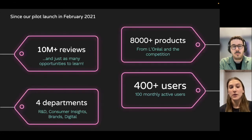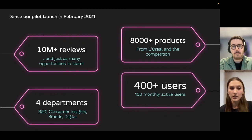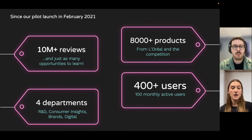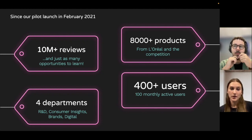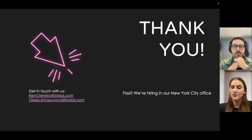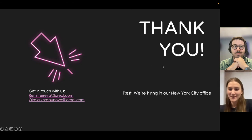These are a few of the models that power the Consumer Loop tool, which was launched in February 2021. Since then, we've had more than 10 million reviews analyzed, covering more than 8,000 products. The tool has been used by four departments across the organization, from research and development to the brands themselves, and we've seen more than 400 users come to the platform — and it's only the start. We hope to get more and more users as we improve the tool and its algorithms. Thank you very much for your attention, and if you have any questions you can reach out to us by email.